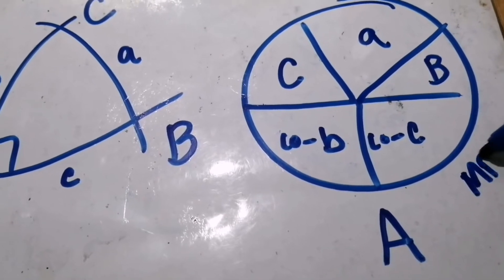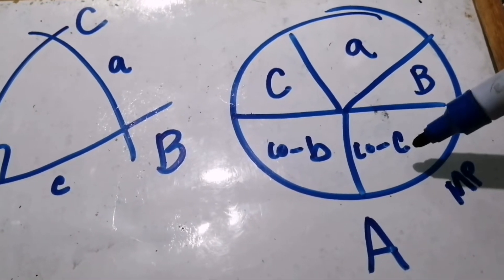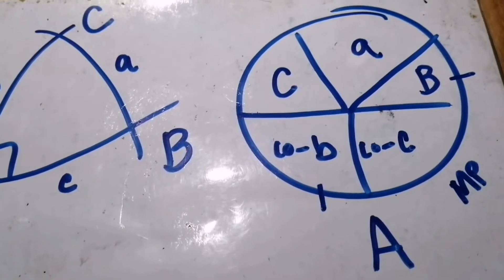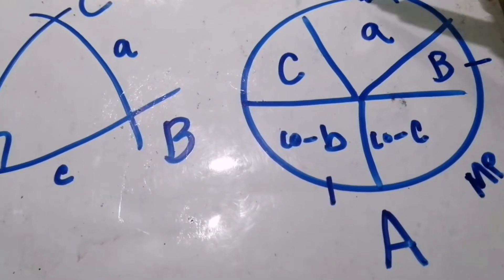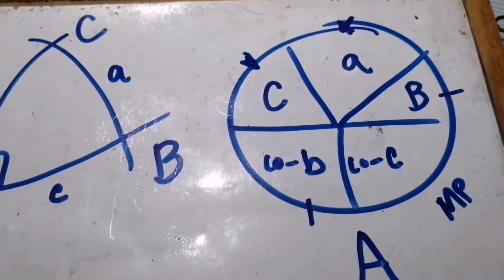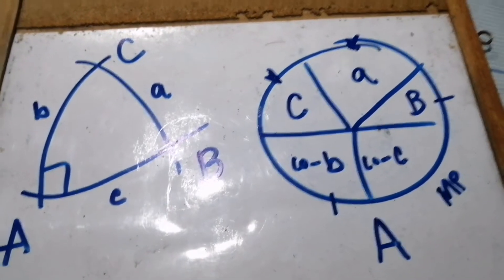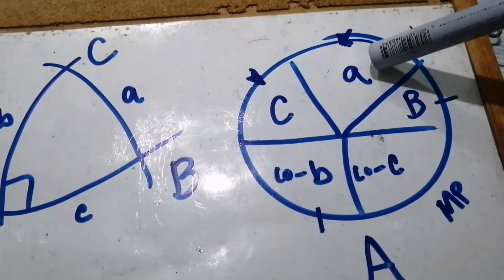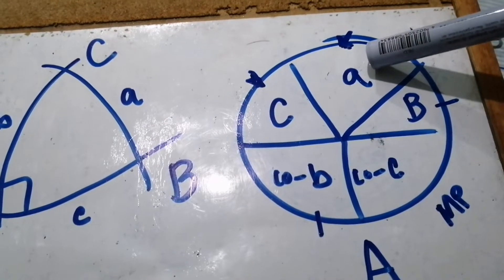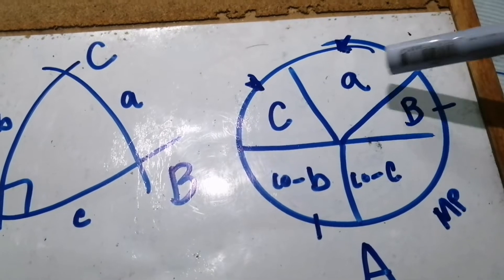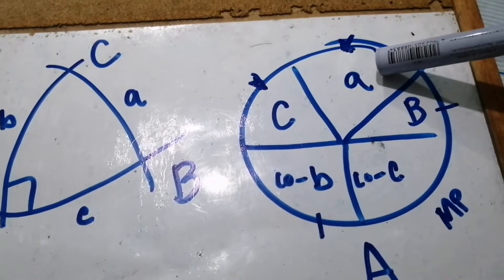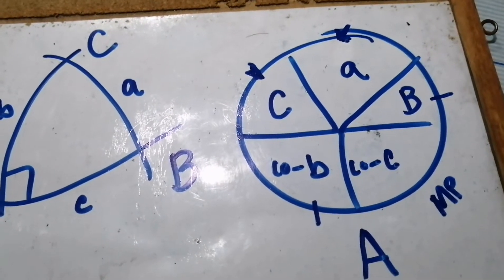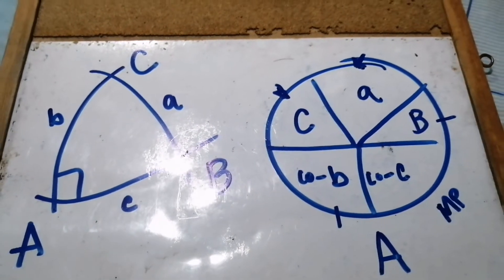The opposite parts of small a are the two not beside it. What if I chose co c as the middle part? The adjacent parts of co c will be angle B and co B, and the opposite parts will be small a and angle C. If small a is the middle part, its adjacent parts are angle C and angle B, and its opposite parts are co B and co c — the ones not beside small a. I hope it's clear how to identify the middle, adjacent, and opposite parts.